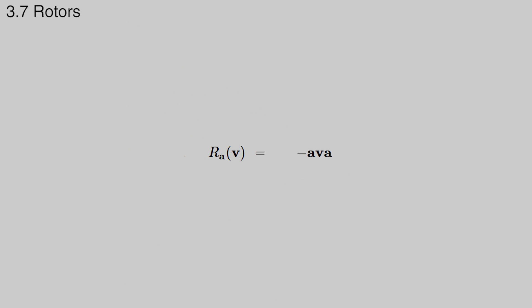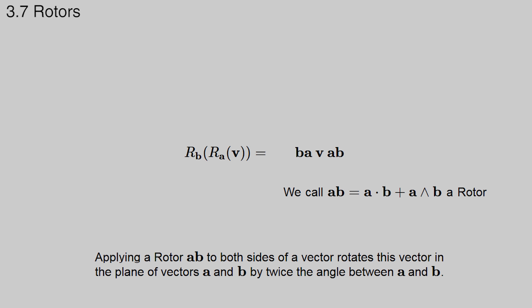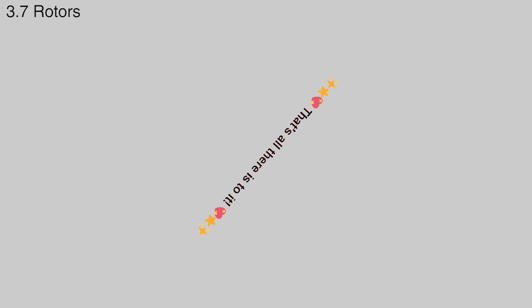In terms of the geometric product, the two reflections simply correspond to the following. We call AB a rotor because multiplying by AB on both sides of a vector performs a rotation. Applying a rotor AB to both sides of a vector rotates this vector in the plane of vectors A and B by twice the angle between A and B. And that's all there is to it.